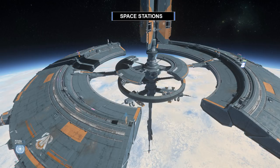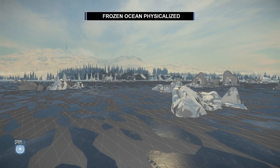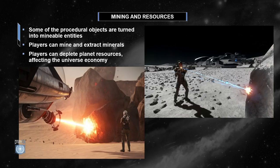Here is another example of exclusion volumes — you can see how the trees are avoiding generating inside the volumes. Additionally, we have space stations orbiting around planets, and all the space station interiors are generated by the procedural layout tool as well and placed as object containers in space. Another new feature added in V4 is the frozen ocean, which can be seen on Microtech. The frozen ocean is physicalized and players can walk and drive vehicles on it. Some of the procedural objects are turned into mineable entities, and with persistency coming online, players will be able to deplete planet resources affecting the universe economy.